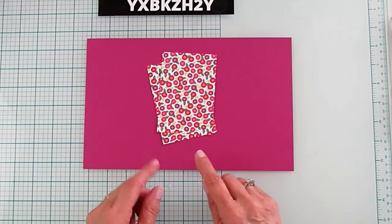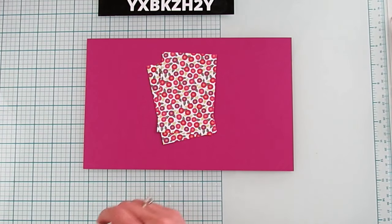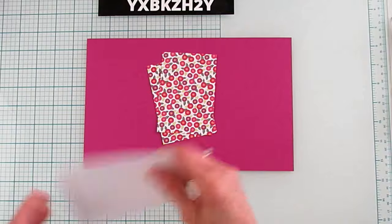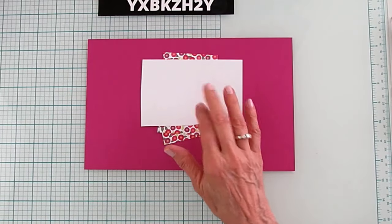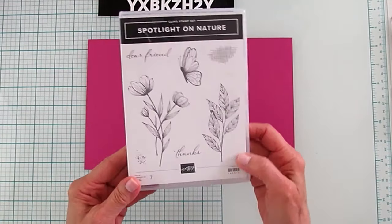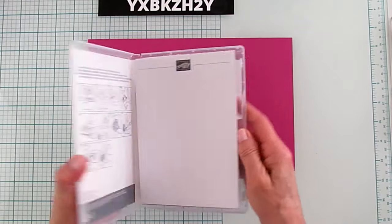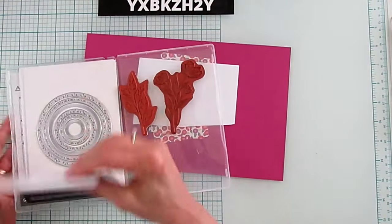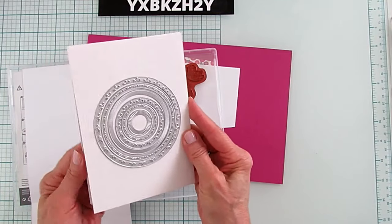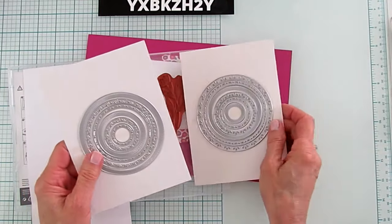So the stamp set that I'm, oh, you need also a piece of Basic White. So I'm using the Spotlight on Nature and I'm also using the dies. So I'm going to pull out the dies. But look at these dies, y'all. Oh my goodness. These are so worth it.